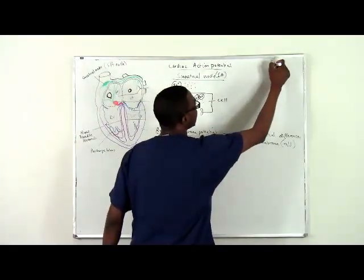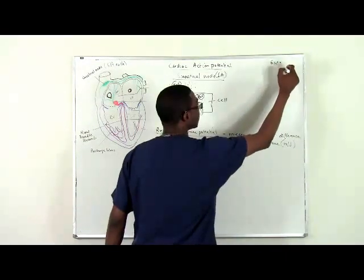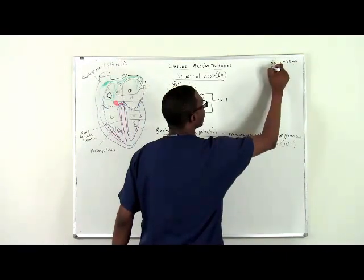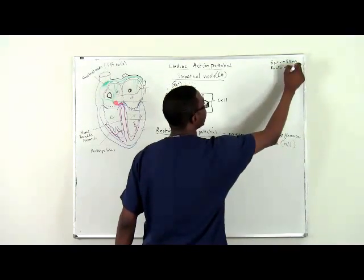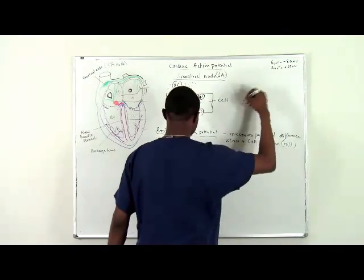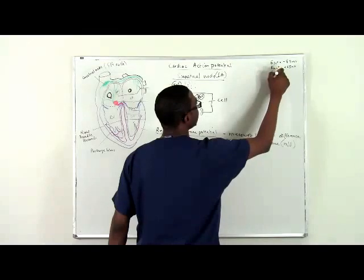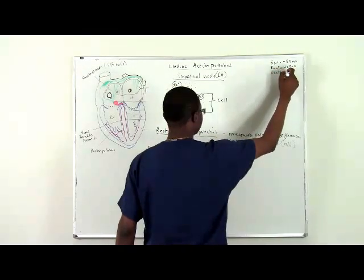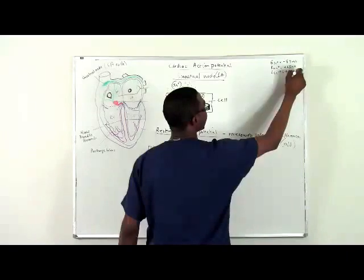We're going to be talking about cardiac action potentials. I'll keep these reference values on the board: potassium at negative 85 millivolts, sodium at positive 65 millivolts, and calcium at positive 120 millivolts.